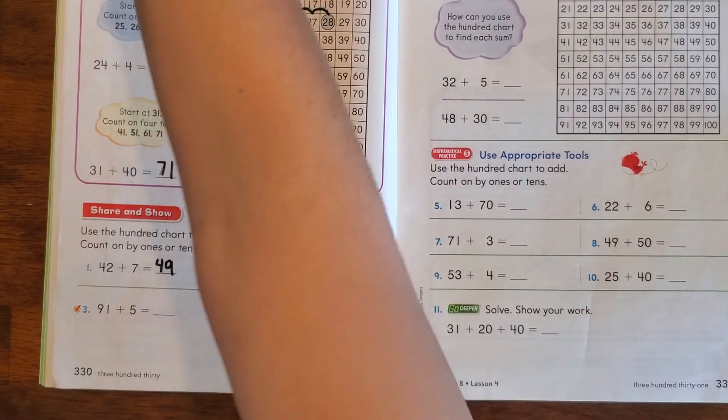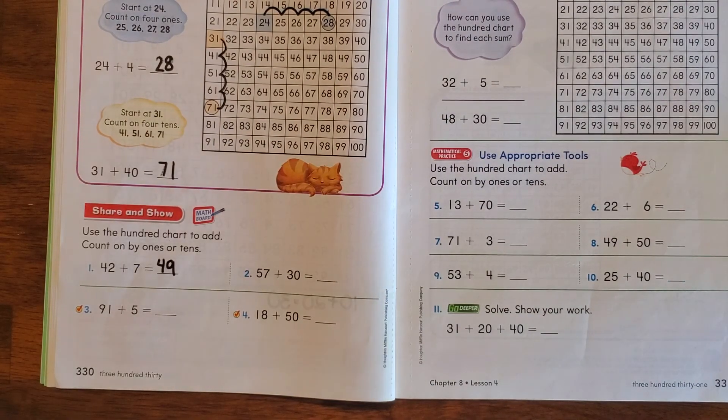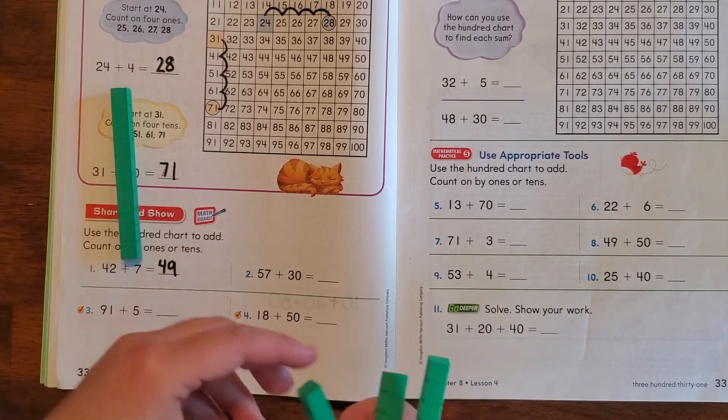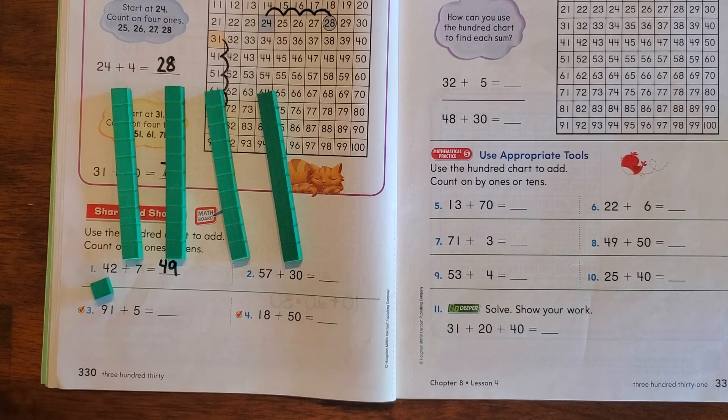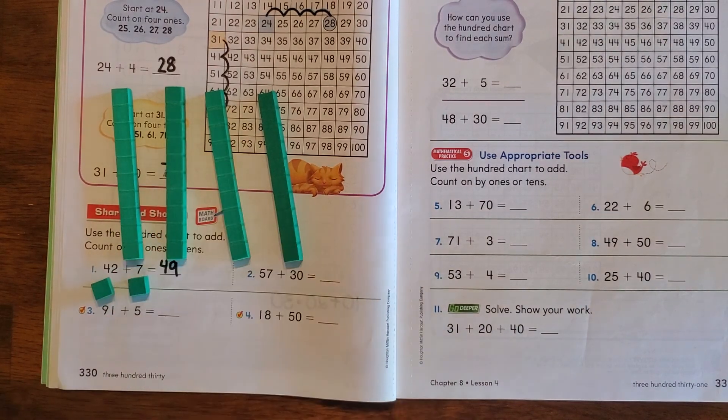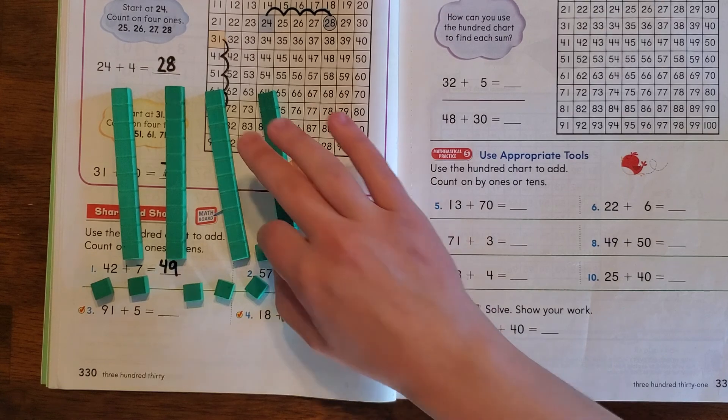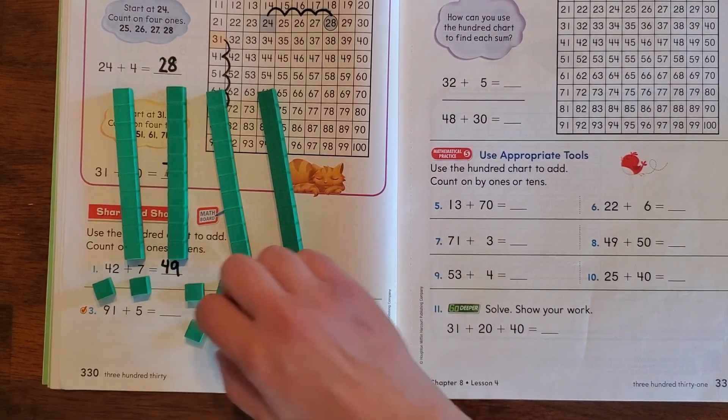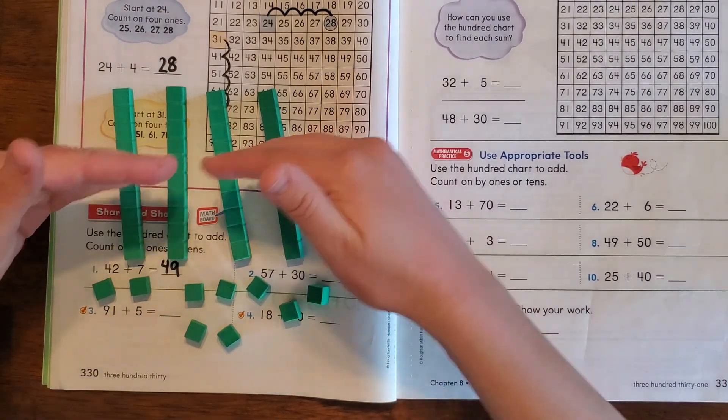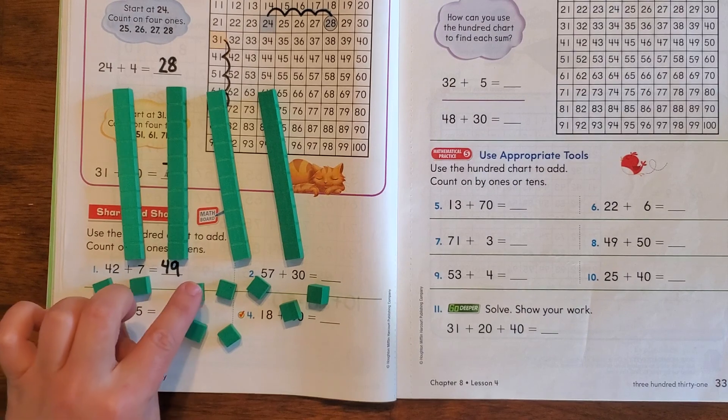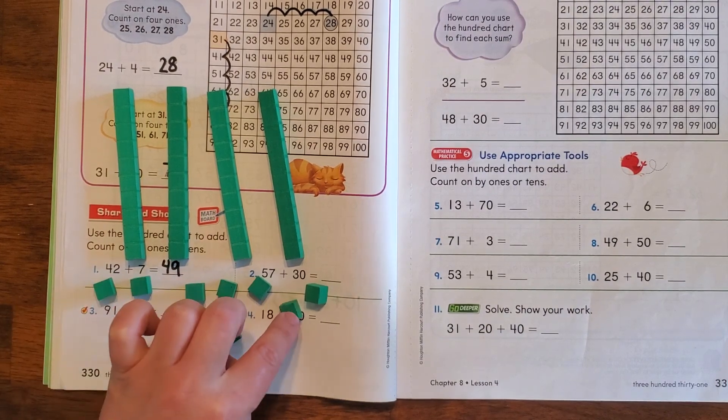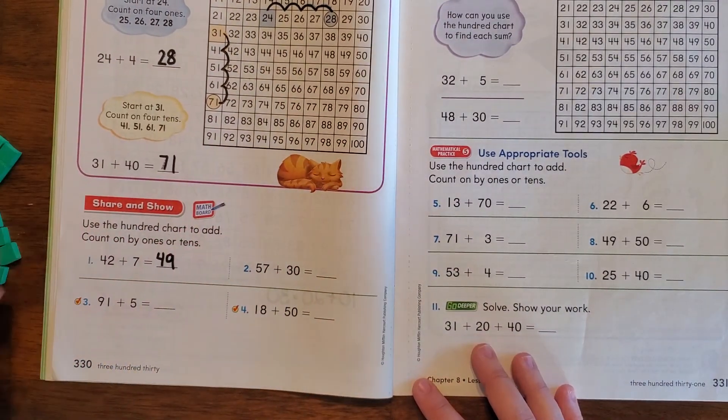So another way that you could solve this is by drawing your tens and ones, your sticks and dots. If we want to do 42 plus 7, that would be 4 sticks and 2 dots, and then we'll just add 7 more dots: 1, 2, 3, 4, 5, 6, 7. Then if we count them up all together, we will get 42 plus 7 more. Let's count them: 10, 20, 30, 40, 41, 42, 43, 44, 45, 46, 47, 48, 49. So that's another way to show that 42 plus 7 is 49.